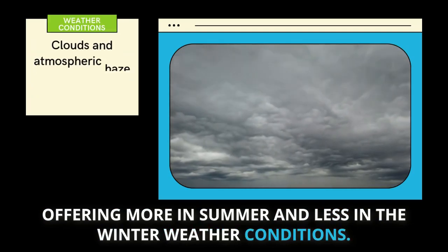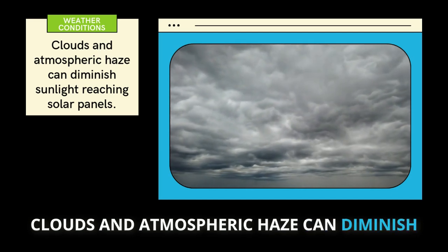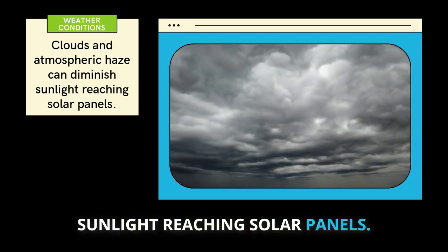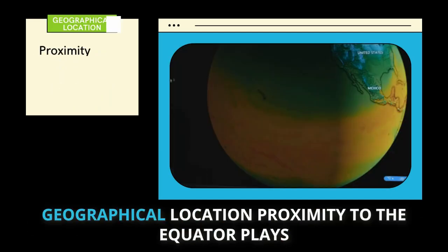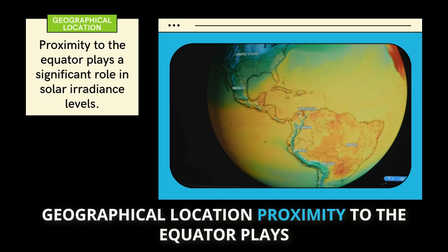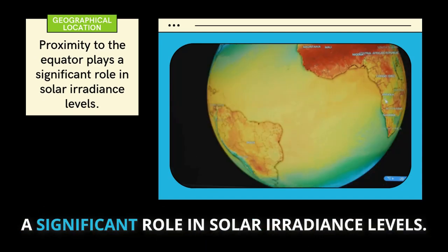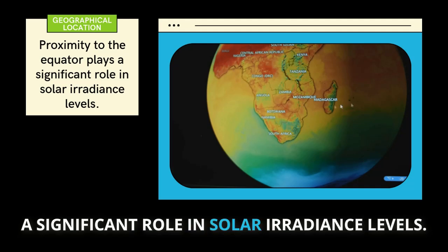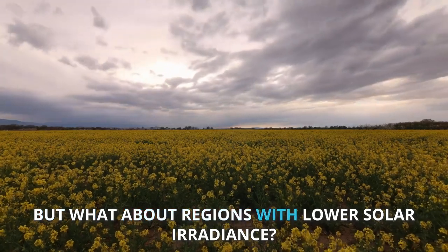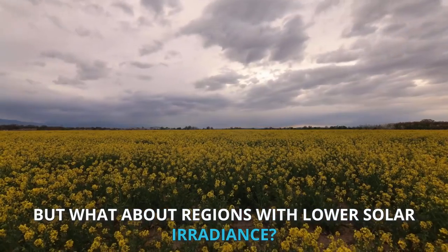Weather conditions — clouds and atmospheric haze can diminish sunlight reaching solar panels. Geographical location — proximity to the equator plays a significant role in solar irradiance levels. But what about regions with lower solar irradiance?